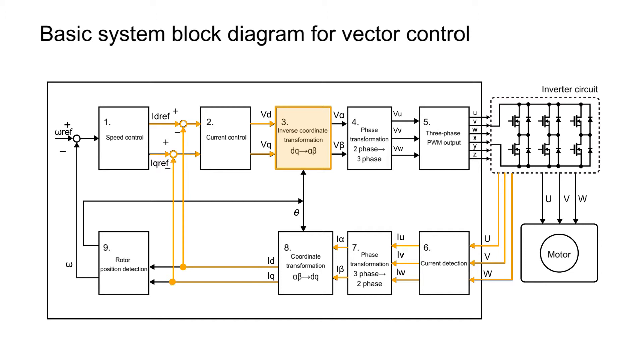Next, reverse coordinate conversion is performed to the stationary coordinates from the rotating coordinates to obtain V-alpha and V-beta.